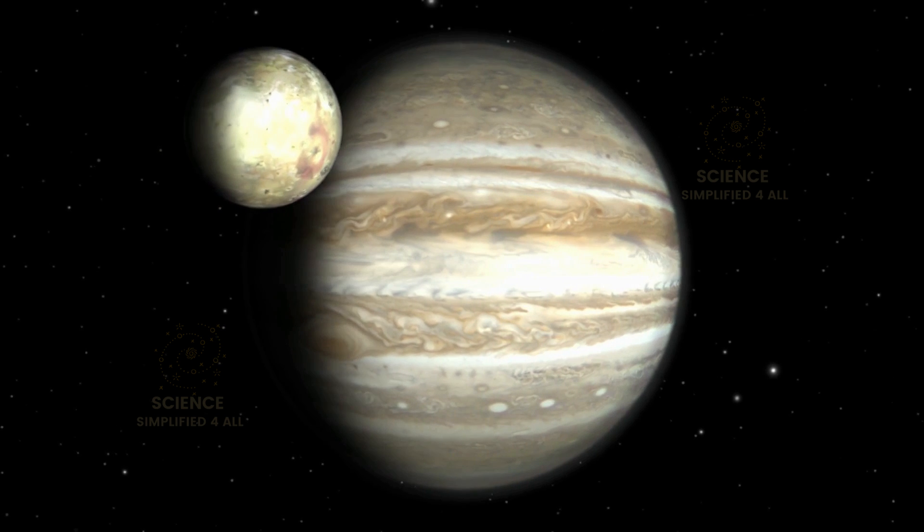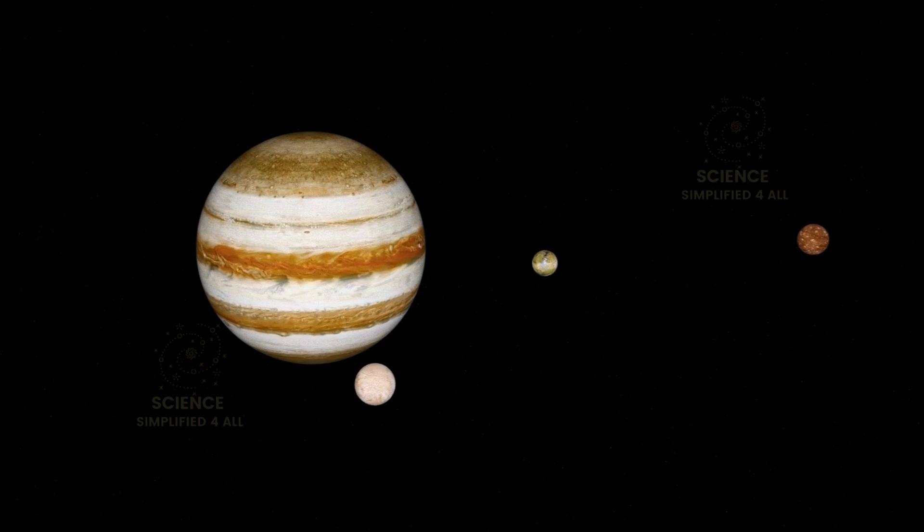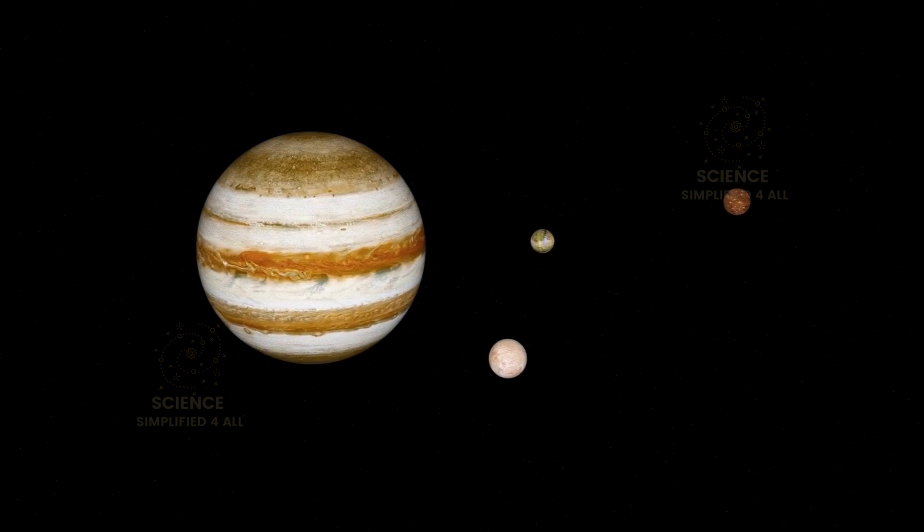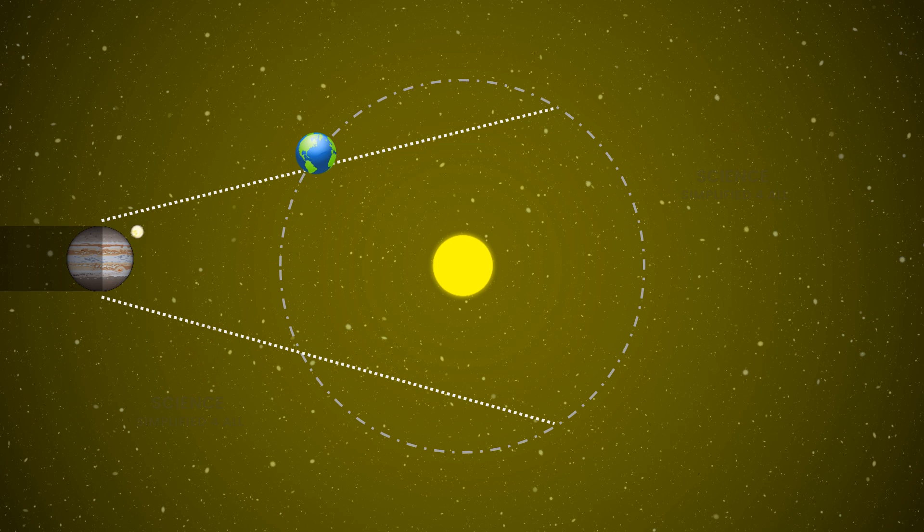Römer focused his observations on Jupiter's moon Io. Jupiter has many moons, but Io caught his attention because it orbits Jupiter every 42.5 hours. As Io orbits, it occasionally passes through Jupiter's shadow, causing eclipses, much like our moon experiences lunar eclipses when it moves into Earth's shadow. Römer began recording the timings of Io's eclipses over weeks, months, and even years. But as he analyzed his data, he noticed something peculiar. The eclipses did not occur at the same intervals throughout the year.